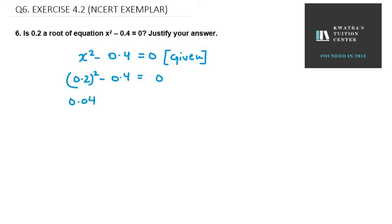On the left hand side, what we will get is 0.04 - 0.4 = 0. On the left hand side we will get -0.36 when we solve this. So you can see that left hand side is not equal to right hand side.